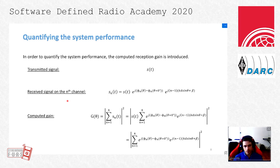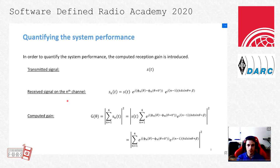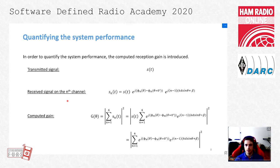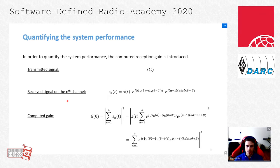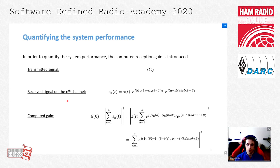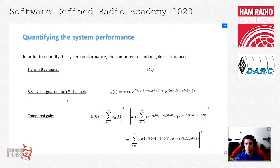With this measurement system, the only information we get is the digitized samples from the received signals on each antenna element. In order to quantify our system's ability to accurately steer our antenna array, we introduced what we call the computed reception gain. If we call our transmitted signal S and suppose it is of unitary amplitude, we write our received signal on the nth antenna element of the array as Sn(t). We suppose at each time that the amplitude remains unitary, enforcing amplitude normalization in software, and we are only interested in the phase shifts the received signals undergo on each channel.